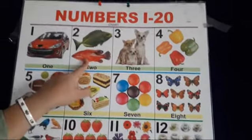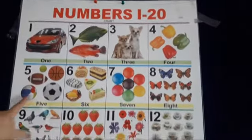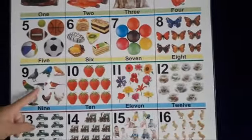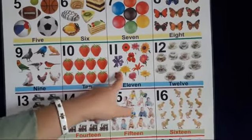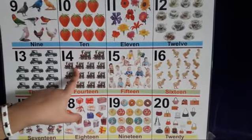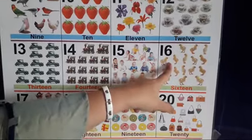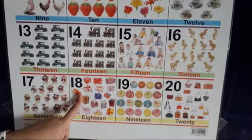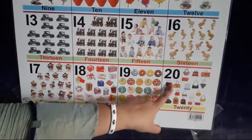1, 2, 3, 4, 5, 6, 7, 8, 9, 1, 0, 10, 1, 1, 11, 1, 2, 12, 1, 3, 13, 1, 4, 14, 1, 5, 15, 1, 6, 16, 1, 7, 17, 1, 8, 18, 1, 9, 19, 2, 0, 20. Okay?